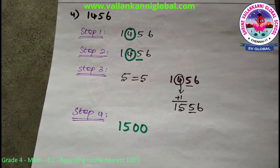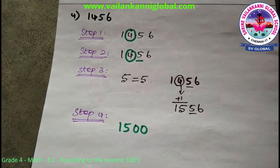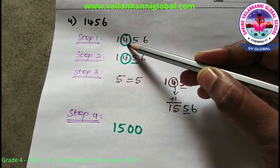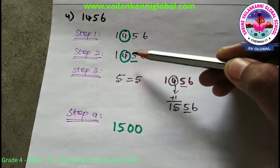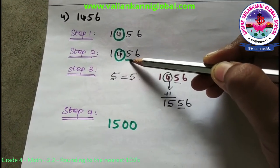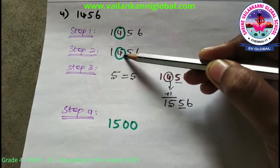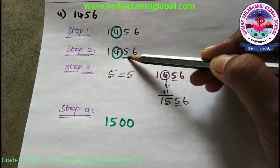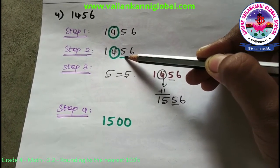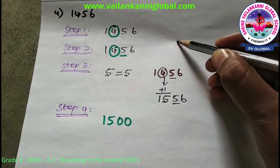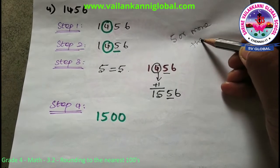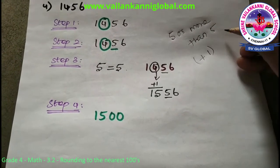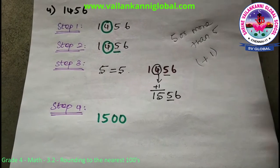Look at the fourth question — this is also a 4-digit number: 1456. Circle the hundreds place; 4 is the hundreds place. Then underline the digit to the right of the hundreds place, which is 5. Step 3 — check whether 5 is more than, equal to, or less than 5. If it is 5 or more than 5, we add 1. If it is less than 5, leave it as is.